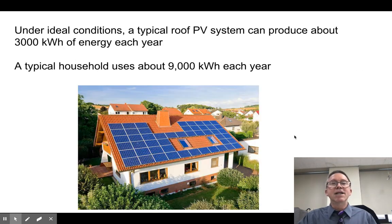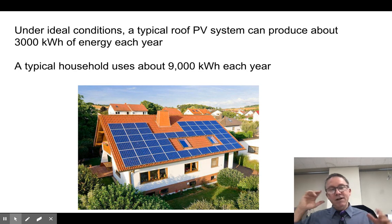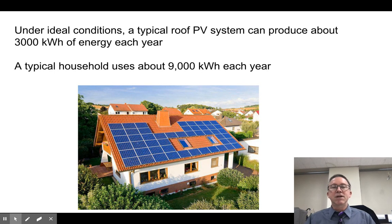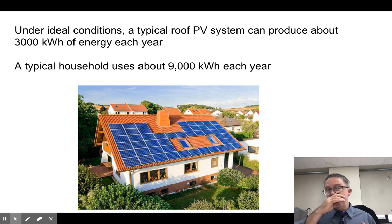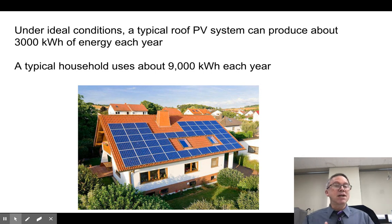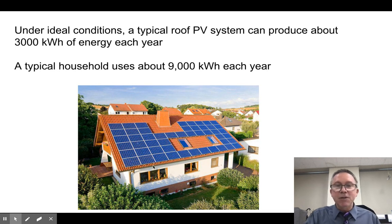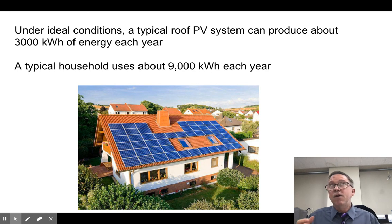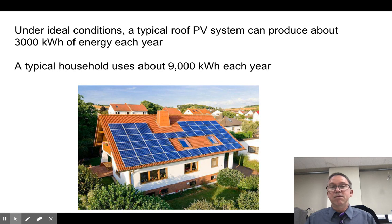Under ideal conditions, these systems can generate about 3,000 kilowatt-hours of energy for a typical American-sized family home — which is fairly large compared to Asian standards. And if you consider that a typical household uses about 9,000 kilowatt-hours per year, we're talking about a third of your energy needs being covered this way. So apart from the initial expenses, deploying rooftop solar could take care of one third of home energy usage, which is really a very cool thing.